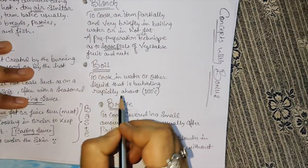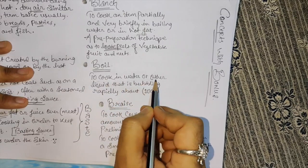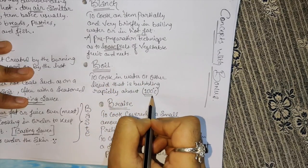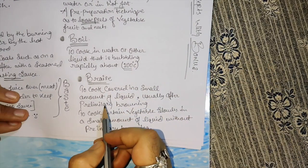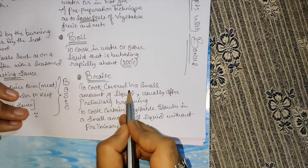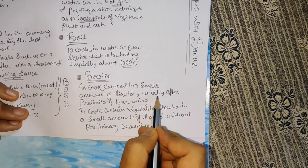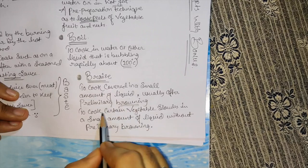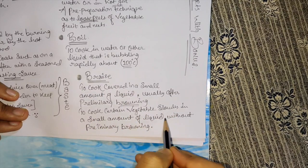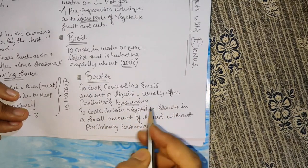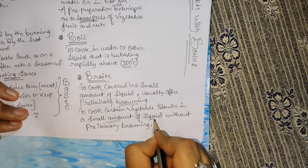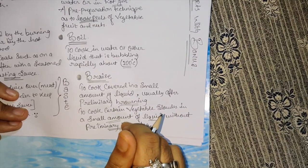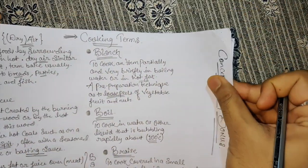The fourth one, boil - cooking in water or liquid that is bubbling rapidly, about 100 Celsius boiling point. The braise - to cook covered in a small amount of liquid, usually after preliminary browning. We're going to cook it in a small amount of liquid without making them brown.